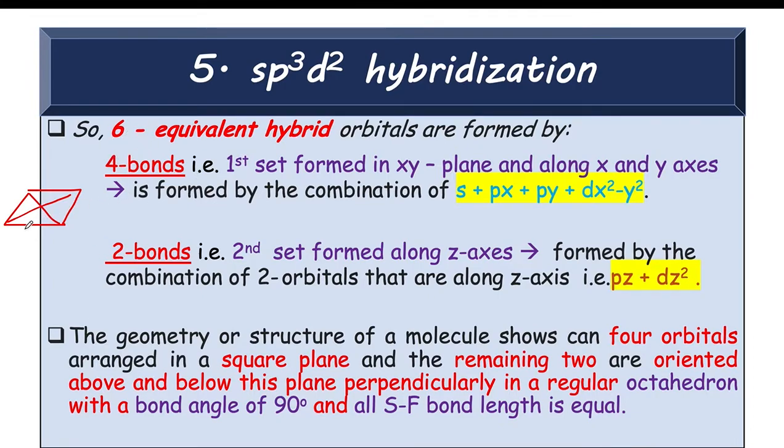6 out of 6, 4 bonds are in 1 plane. The 2 rest of the bonds, the 2nd set is formed along the z axis. So it is formed by the combination of the orbitals which are along z axis.